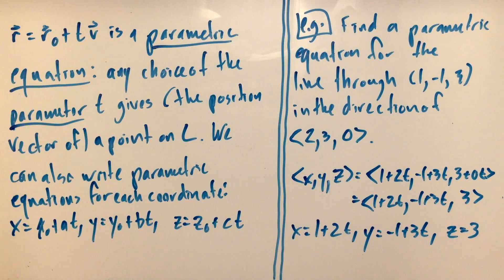We call the vector equation r = r0 + tv a parametric equation. That is, we have this parameter t, which for any value of t, we plug it into this equation and it gives us the position vector of a point on the line L. So the line is parameterized by t.